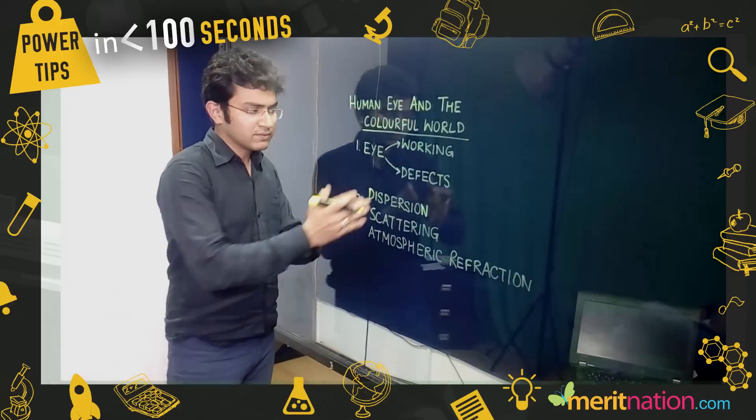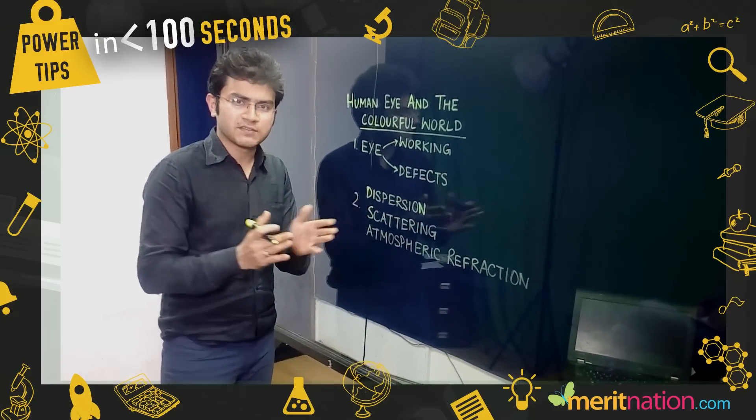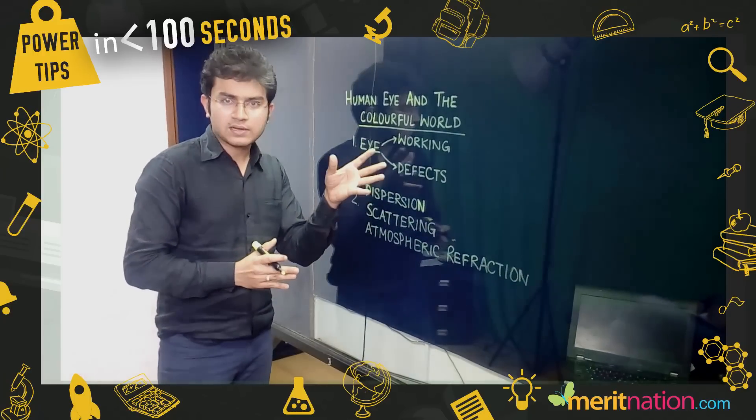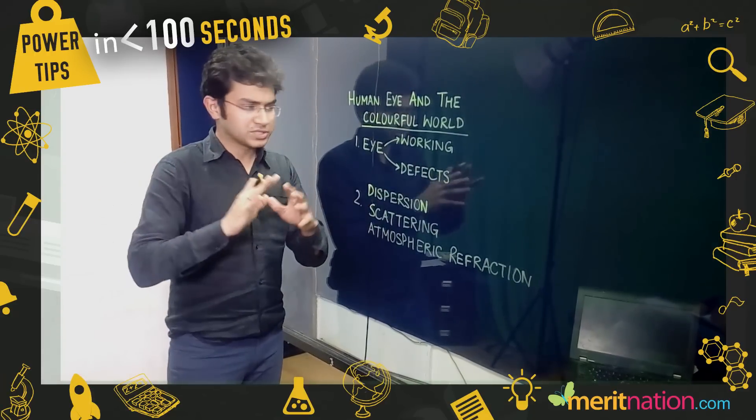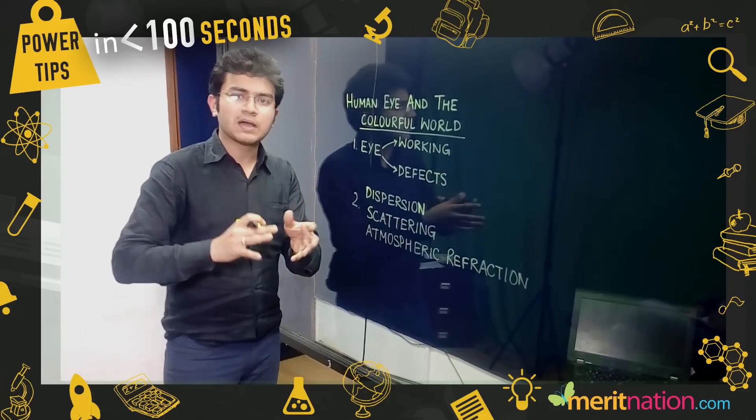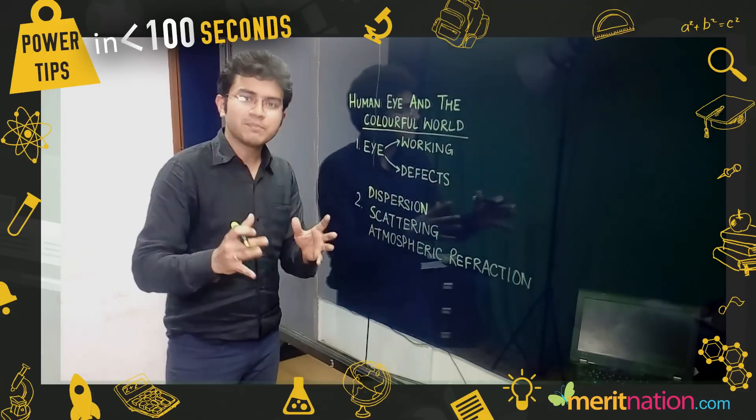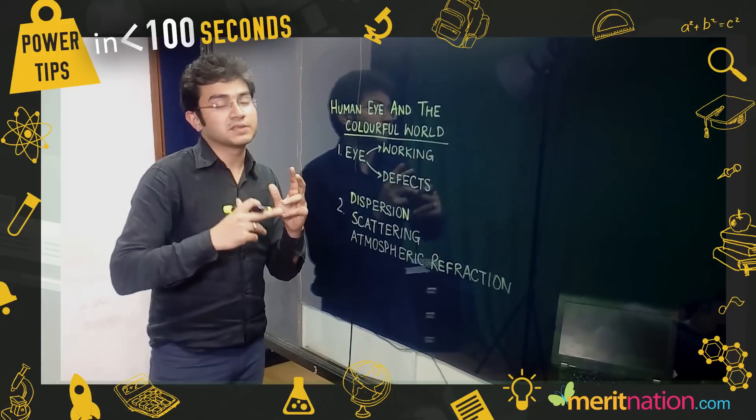When we talk about the defects, there are three basic defects. Myopia is kind of one kind of defect, and then hypermetropia and presbyopia are the second kind. Generally, the confusion is between presbyopia and hypermetropia. You have to remember the effect of the two is the same, but the cause is different.